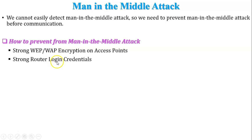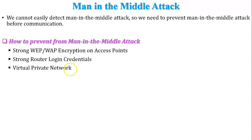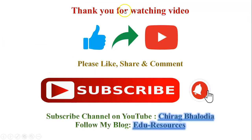Second, use strong router login credentials — if your router login credentials are weak, anyone can join your network and attack your communication. Third, use a Virtual Private Network (VPN), which provides more security and a secure environment during LAN communication. Fourth, use HTTPS whenever you send data over a different network or the internet, as HTTPS provides strong encryption for your data, public keys, and conversation.